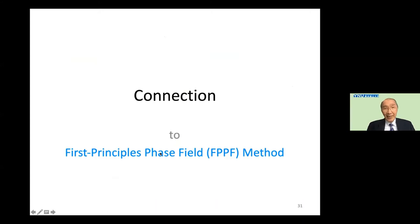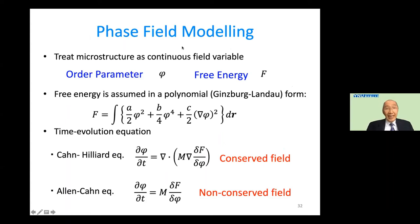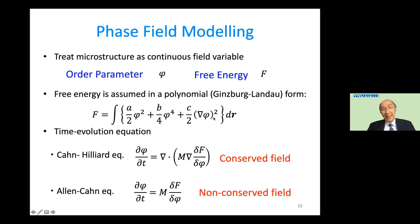We want to connect this approach to the first principle phase field method. Phase field modeling treats microstructure as continuous field variables named the order parameter phi. The free energy F as a function of phi is required. It is usually assumed in a polynomial Ginzburg-Landau form: (A/2)φ² + (B/4)φ⁴ + (C/2)|∇φ|², integrated over the whole space.